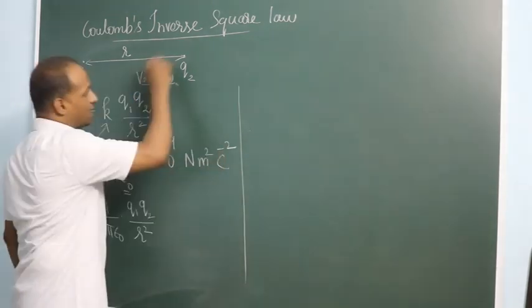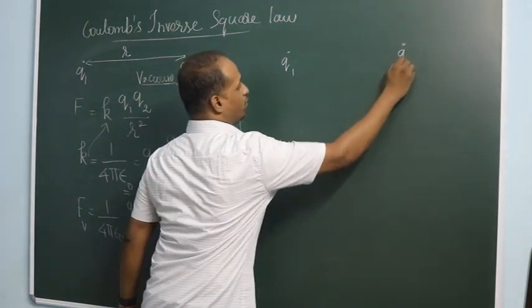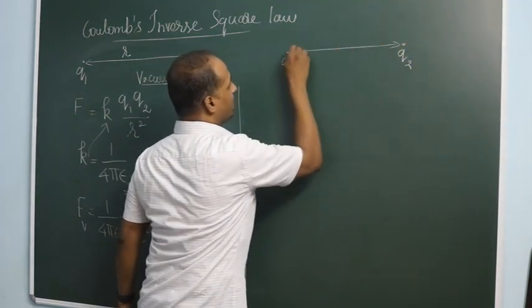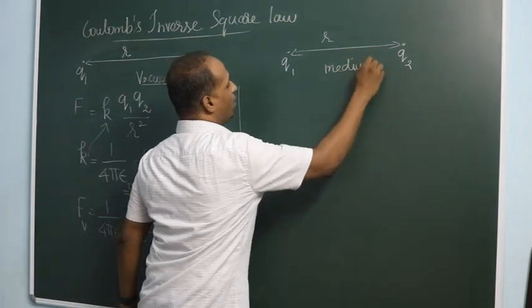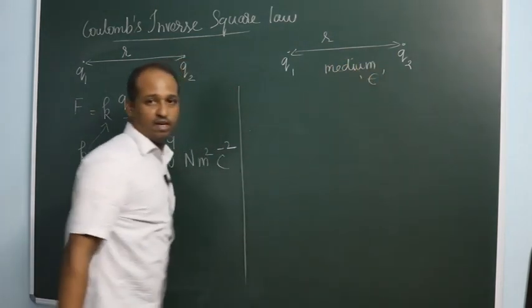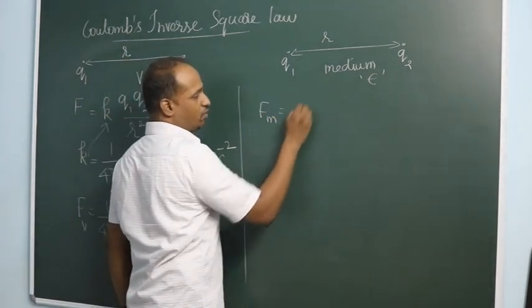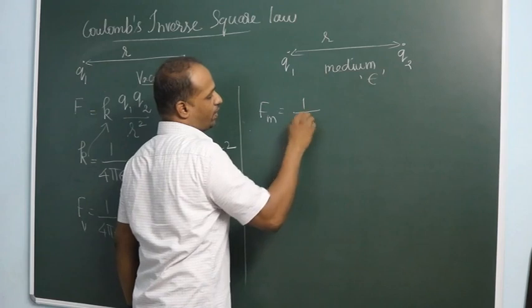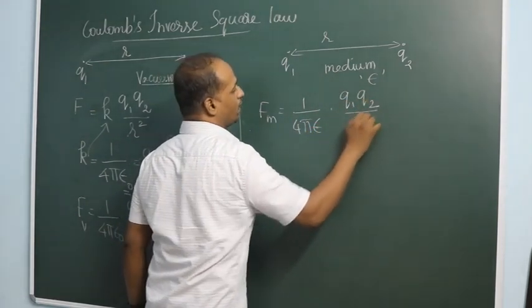Suppose you keep these two charges in a medium, same distance. These same two point charges with the same distance, but it is kept in a medium of permittivity epsilon. Then F medium will be equal to 1 by 4 pi epsilon into Q1 Q2 by R square.